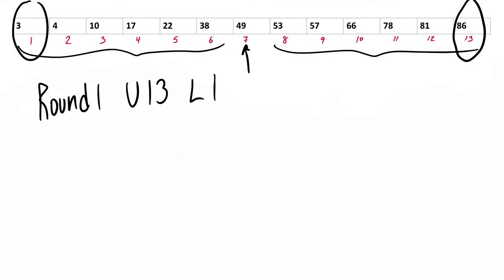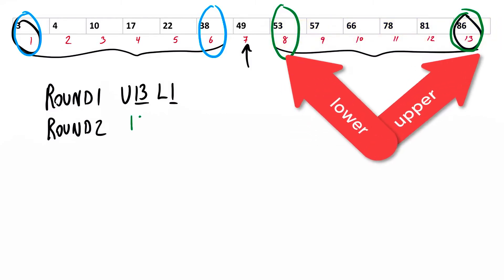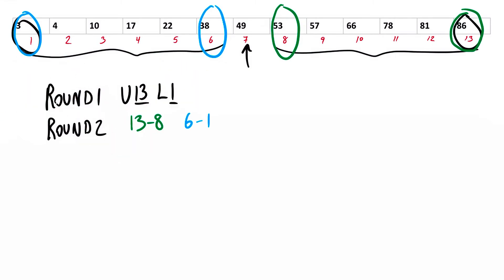So in round 2, there are two possibilities for upper and lower. My lower position could be 1 and upper position could be 6, or my lower position is 8 and upper position is 13. So in round 2, I can either have 13 and 8, or 6 and 1 as my range of values. It can only be one of these when I compare the midpoint to the number I'm looking for — it's not going to be both.